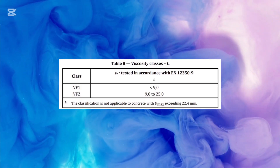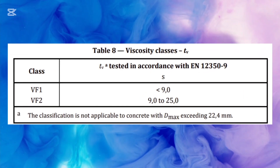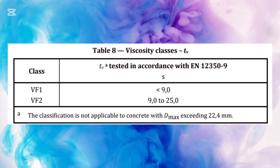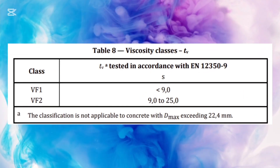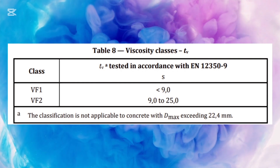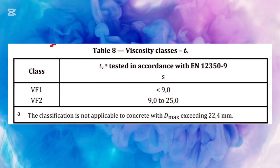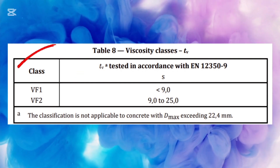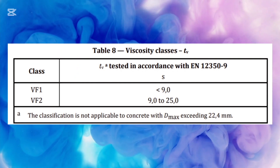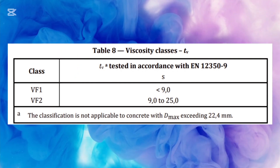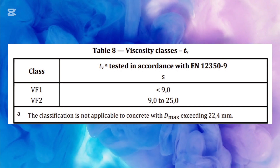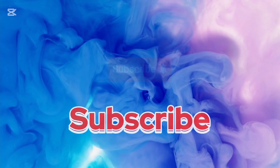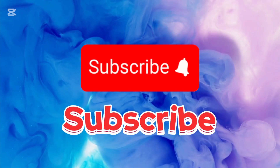Now, depending on the test result, according to BS EN 206, V-Funnel flow shall fall into two classes. Class VF1 for less than 9 seconds, or Class VF2 for a flow time between 9 to 25 seconds. Let's see what we got.